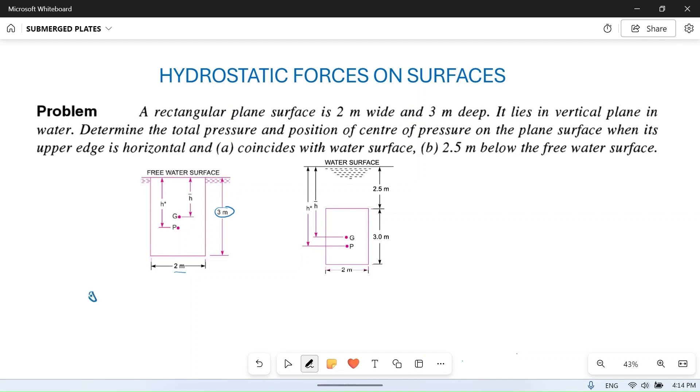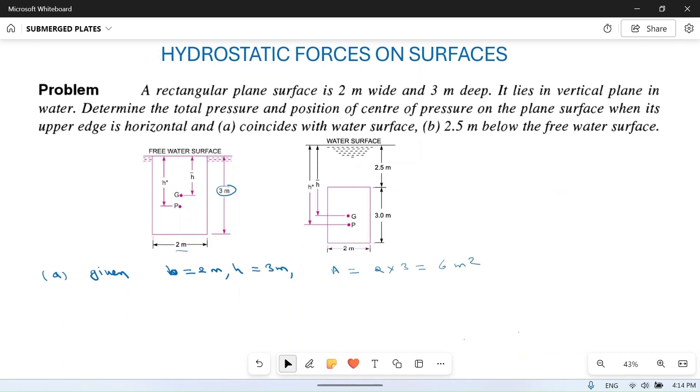Given in the question for part A: width or B is 2 meters, height h is equal to 3 meters. So what is the area of this plate? Area is 2 x 3 equals 6 meter square. And what do we have to find? Determine the total pressure.